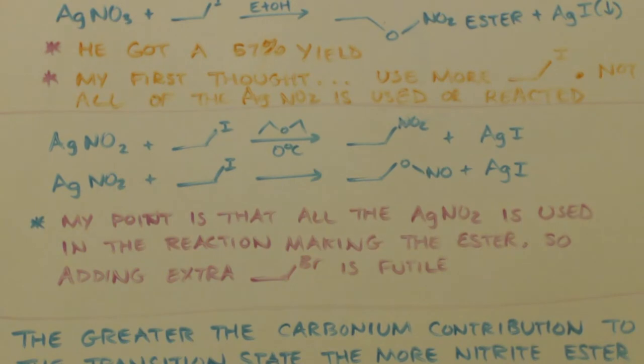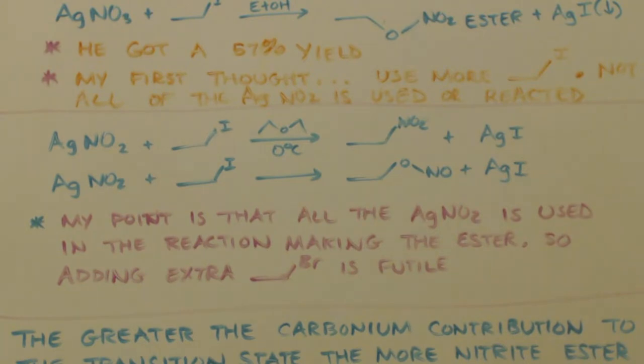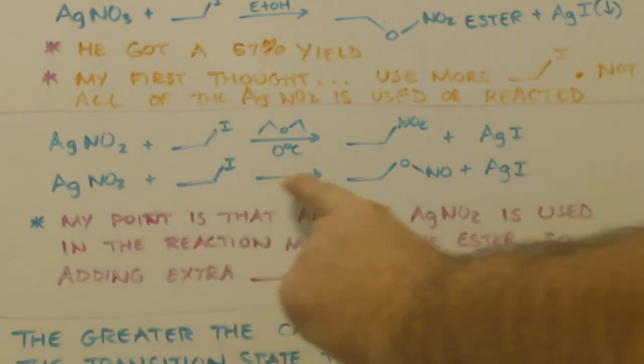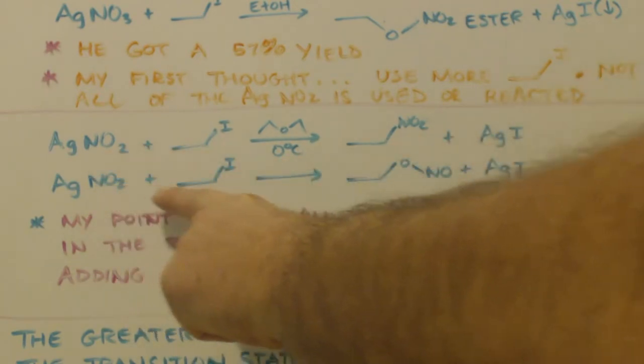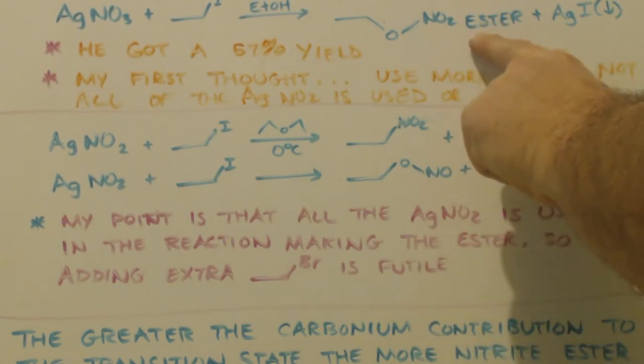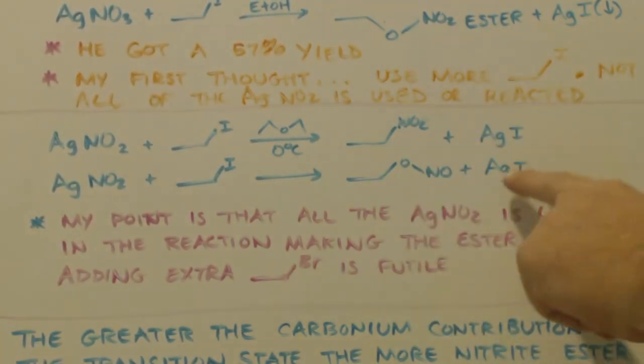Now since then, I found out that that equation up on top here, where it says he's making nitroethane, that's true, but there's actually two reactions taking place. This one that we already mentioned, but also this one. You can see it's the same exact thing. You're going to be making, instead of a nitrate ester, you're going to make a nitrite ester, and again, you'll have your silver iodine precipitating out.